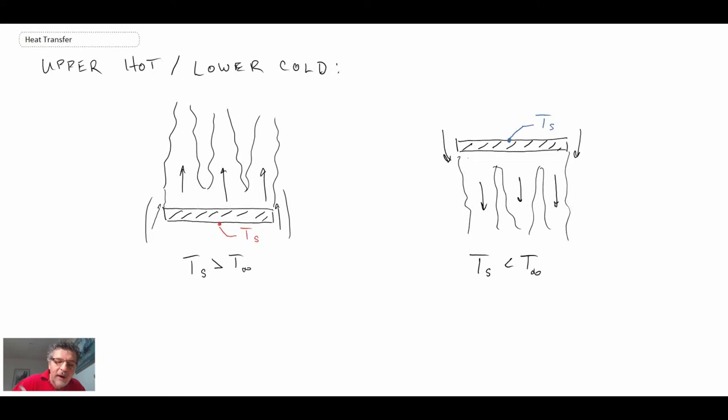On the left-hand side, we have the case of upper hot. As the fluid on top of the plate heats, it moves up, and through the continuity equation, we know we're going to have entrainment of cooler fluid around the outside.